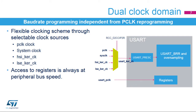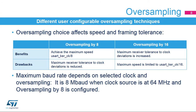The USART has a flexible clocking scheme. Its clock source can be selected in the RCC and can be either the peripheral clock or APB clock, the system clock, the high-speed internal RC oscillator or HSI, or the low-speed external oscillator or LSE. The USART clock source can be divided by a programmable factor in the USART PRESC register. The registers are accessed through the APB bus, and the kernel is clocked with USART KERCK, pre-scaled or not, which is independent from the APB clock.